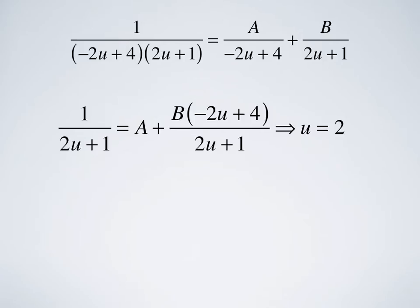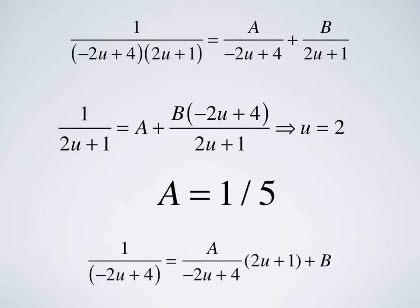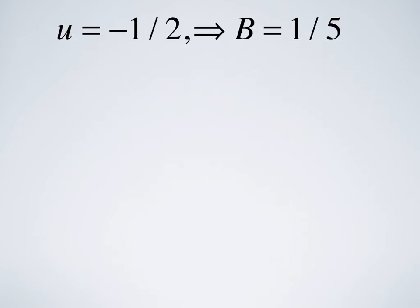To eliminate B, we multiply both sides by (-2u+4). We get 1/(2u+1) = A + B(-2u+4)/(2u+1). Setting u = 2 makes the B term vanish, and we find A = 1/5. To find B, we go back and multiply by (2u+1), then set u = -1/2 to eliminate A, and we find B = 1/5.